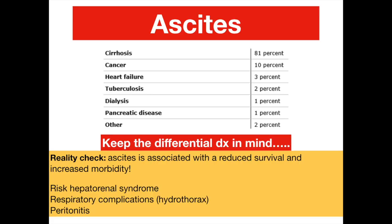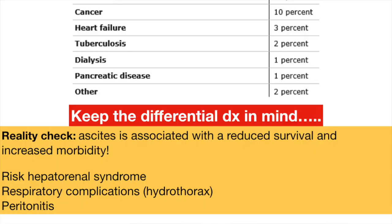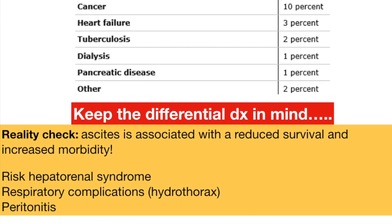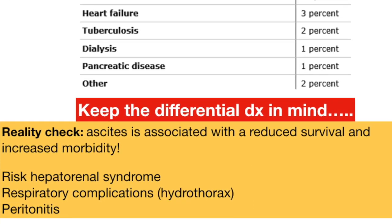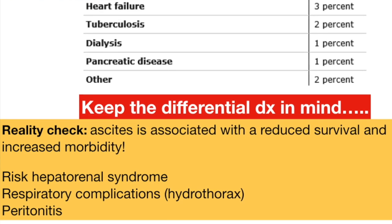The next major heading is ascites. The vast majority of ascites you're going to see is related to cirrhosis, with smaller amounts related to cancer, heart failure, TB, renal failure, or pancreatic disease. The major consideration is that patients who develop ascites in the setting of cirrhosis have increased mortality overall. They are at risk for hepatorenal syndrome, peritonitis, and the development of hepatic hydrothorax.